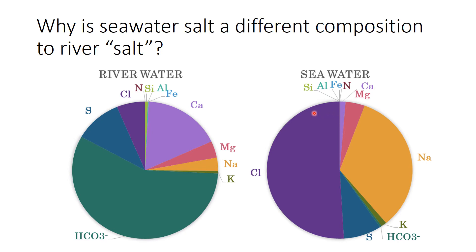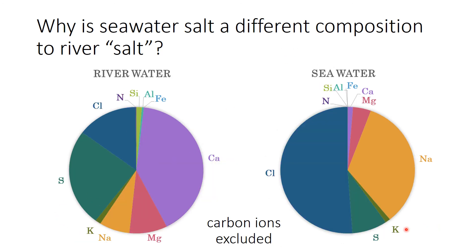Then we have to think about what happens to that river water when it enters the ocean. Here are pie diagrams showing the composition of river water and the composition of seawater. Although seawater has much more salt dissolved in it than river water, it's also of a slightly different composition. I've taken away the carbon species so all other proportions remain the same. River water has lots of calcium and lots of sulfur, but relatively little chlorine, hardly any sodium or potassium.